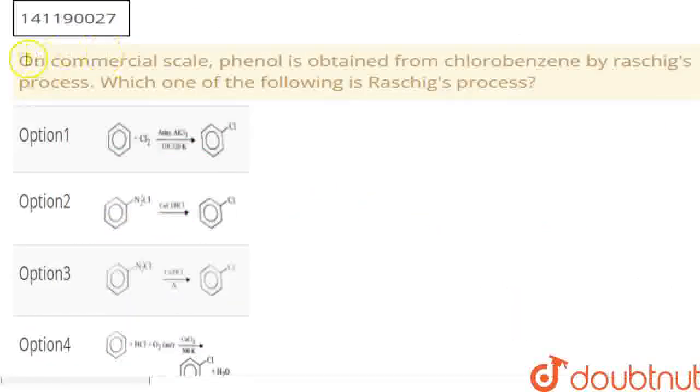Hello students! The question asks: on commercial scale, phenol is obtained from chlorobenzene by Raschig's process. So, which is the Raschig's process?